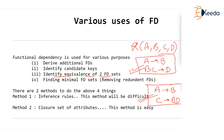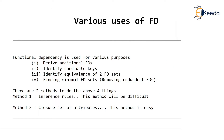The fourth use is finding minimal FD sets — removing redundant FDs. It might happen that the creator of the table has defined so many functional dependencies and we find that some of them are really repeated or redundant. Then we want to reduce the number of functional dependencies by removing unwanted or redundant FDs. This is also a use of FD.